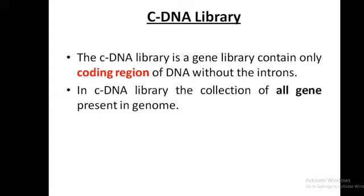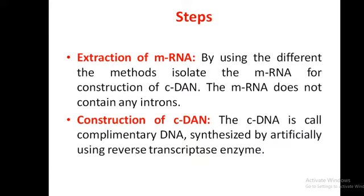In the human body a large number of genes are present, and all those genes are found with the help of different techniques. We cannot find the whole gene directly, but we can find the mRNA which is expressed to produce proteins. The first step of cDNA synthesis is extraction of mRNA using different methods like chromatography or electrophoresis techniques. We take mRNA instead of DNA because mRNA does not contain any introns.